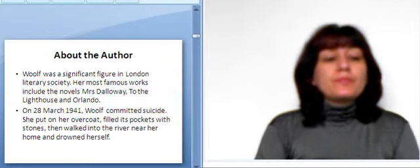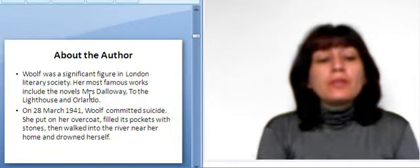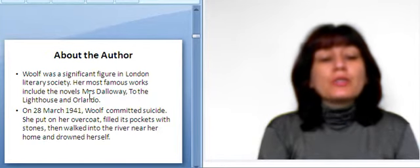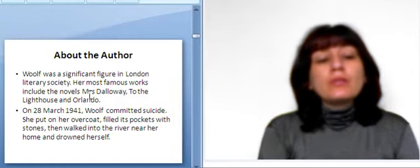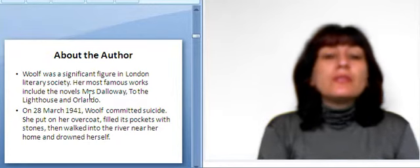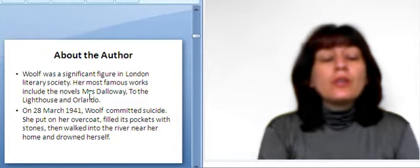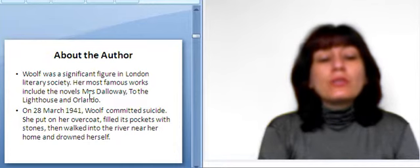Virginia Woolf was a significant figure in London Literary Society. Her most famous works include the novels Mrs. Dalloway, To the Lighthouse, and Orlando. On the 28th of March in 1941, Woolf committed suicide. She put on her overcoat, filled its pockets with stones, then walked into the river near her home and drowned herself.